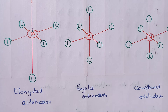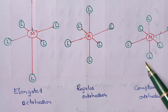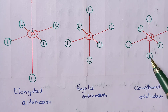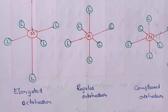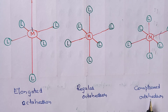Sometimes the octahedron gets compressed — that means the bonds along the z-axis are shortened compared to equatorial bonds. This is also Jahn-Teller distortion. When there is no such change, that is no distortion.